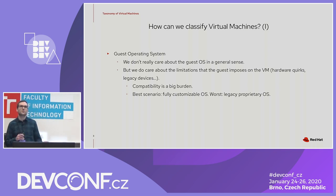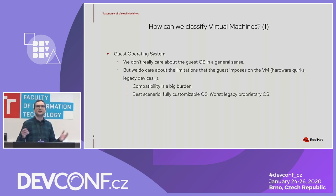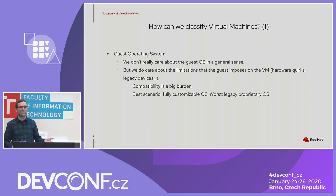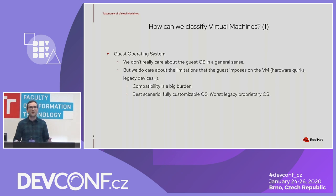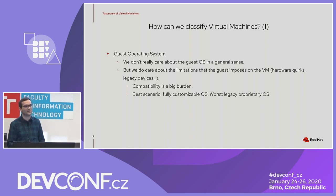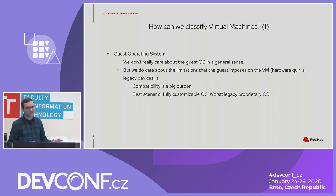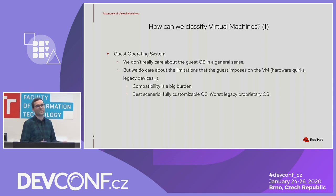The first aspect is the guest operating system running inside the VM. We don't care about guest OS in a general sense — not Windows versus Linux — but we do care about the limitations the guest imposes on the VM: whether we need to support hardware quirks or emulate legacy devices, since virtualization compatibility is a big burden. The best scenario is a fully customizable OS you can build from source; the worst is running a legacy binary-only proprietary OS.